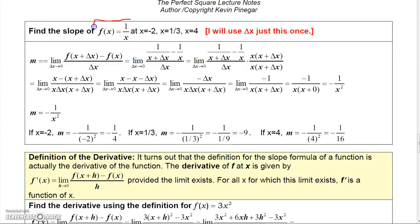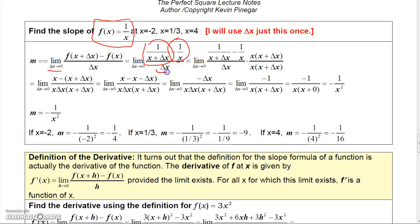Here's another one. Let's do f of x equals 1 over x and find a formula for that. Now I'm going to use delta x here just to show you that it works the same way. So I'm going to have delta x going to 0, and I'm going to do f of x plus delta x minus f of x all over delta x. Well, f of x plus delta x would make that 1 over x plus delta x, and then minus f of x, and then I divide by delta x.